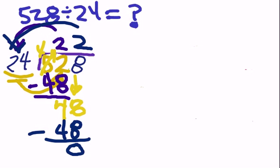Which is great, which means that 24 divides into 528 evenly. So the answer to this problem is 22.